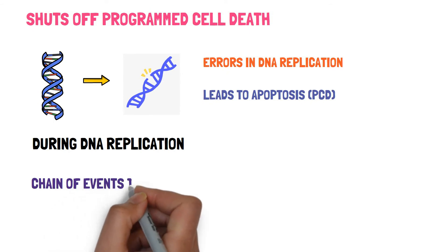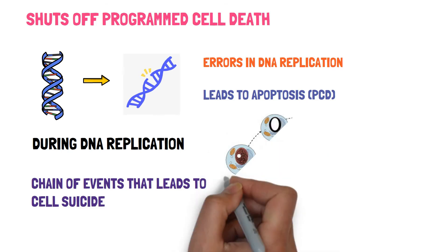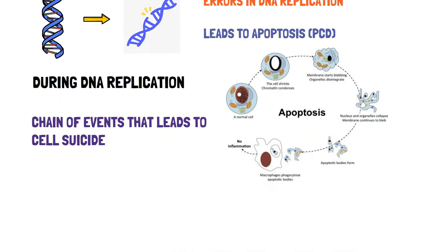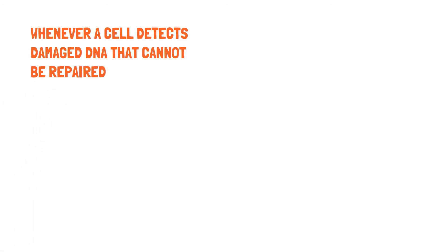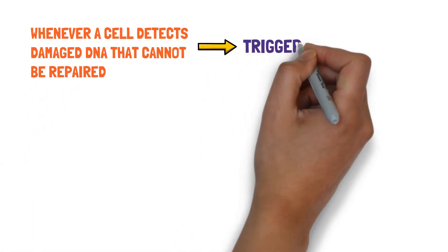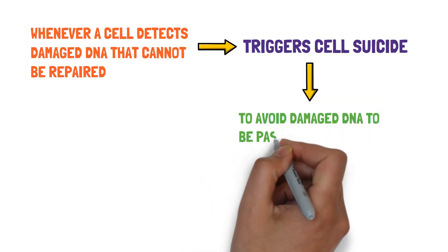Apoptosis is a chain of events that leads to self-destruction of a bad cell inside the body. So, whenever a cell detects damaged DNA that cannot be repaired it triggers programmed cell suicide so as to avoid the damaged DNA to be passed on to the new cells.